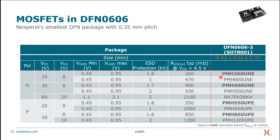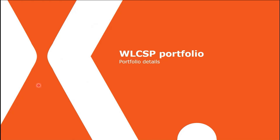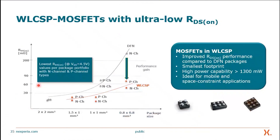The DFN0606 products are just released — brand new. N and P-channel products are available in different voltages. Moving from DFN to wafer level chip scale: the key difference is that DFN is a plastic encapsulated package, while wafer level chip scale is simply the silicon with solder balls underneath — a flip-chip technology. Since you only have the silicon, the active area is much larger, giving you a lower RDS-on. The bigger active area also gives high power capability.